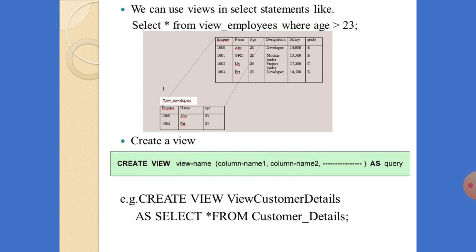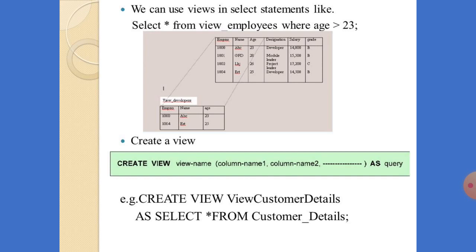The view won't occupy any space in memory. To see all records in view_customer_details, you can give: SELECT * FROM view_customer_details. Suppose I created a view called 'employees' — to see all records I give: SELECT * FROM view_employees. If I want records where age is greater than 23, I write: SELECT * FROM view_employees WHERE age > 23. Like that we can create views and also query the data in them.